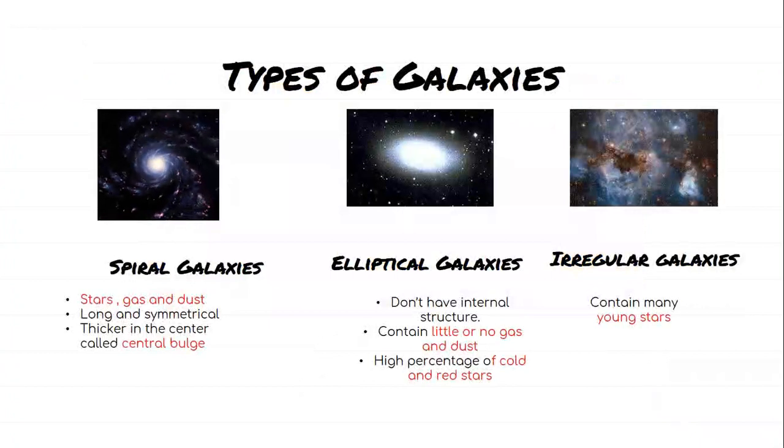Types of galaxies. What are the main types of galaxies? We have a spiral galaxy, like the Milky Way galaxy where the solar system is located.